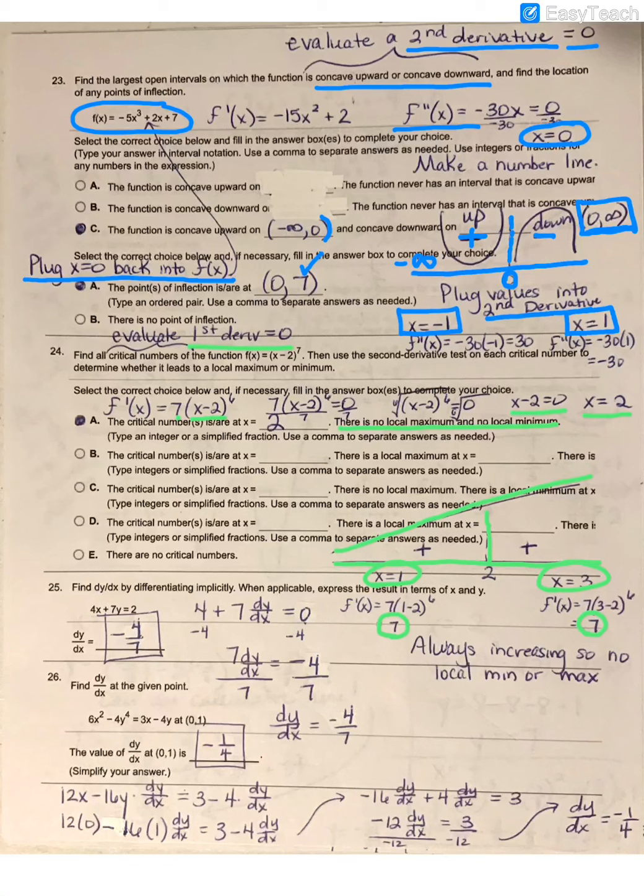On question 25, we're doing implicit differentiation. Anytime you are deriving, pay attention to what is in the bottom. If it says dx on bottom, you're deriving everything with respect to x.